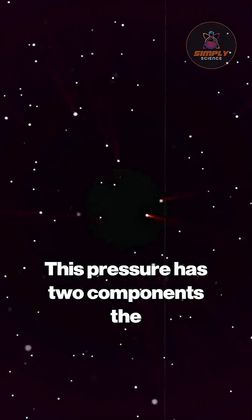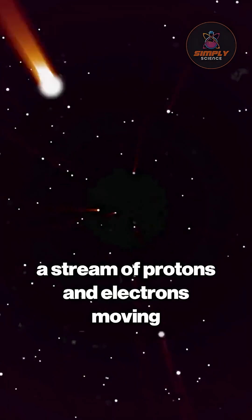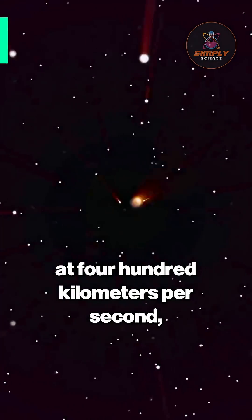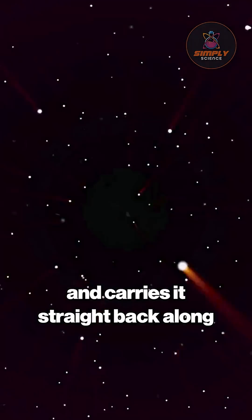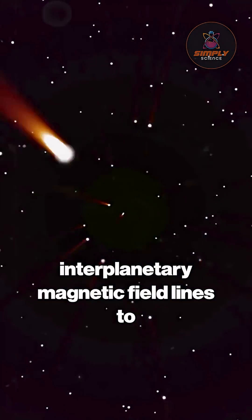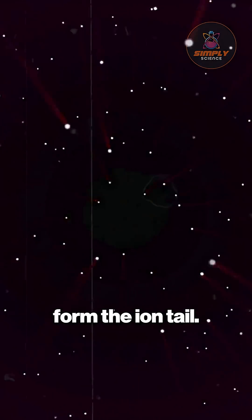This pressure has two components. The solar wind, a stream of protons and electrons moving at 400 kilometers per second, which interacts with the gas, ionizes it, and carries it straight back along interplanetary magnetic field lines to form the ion tail.